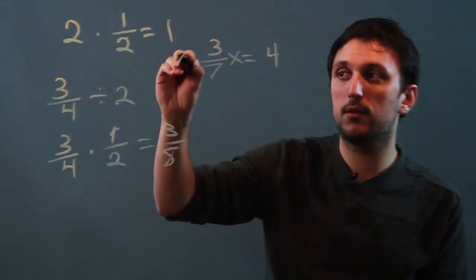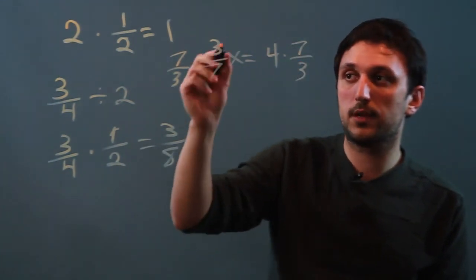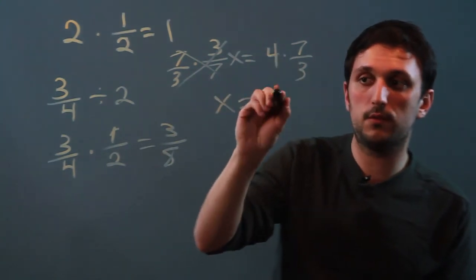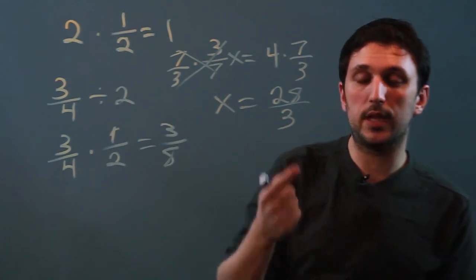Multiply by 7 thirds. So this cancels out because it's just 1. So x equals 4 times 7 is 28 over 3. So the answer is 28 thirds.